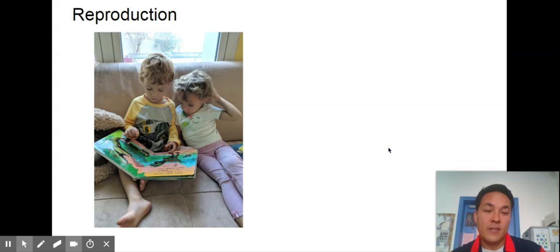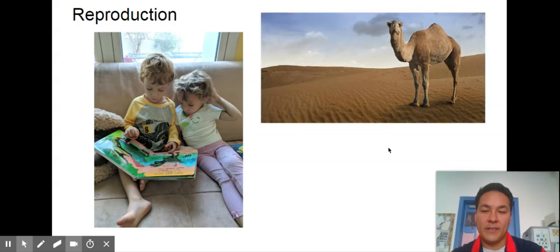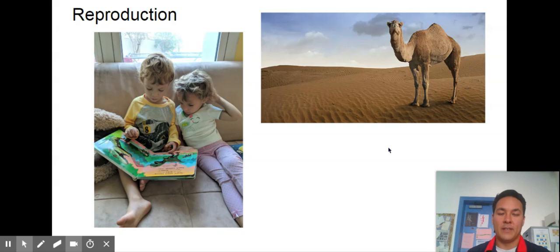Reproduction. Everything that's alive has to have the ability to reproduce. That reproduction could be sexual or asexual. Asexual, the prefix a means without, would be splitting or mitosis or binary fission in bacteria. Humans engage in sexual reproduction. We'll learn about meiosis and mitosis and how different alleles and genes are combined.